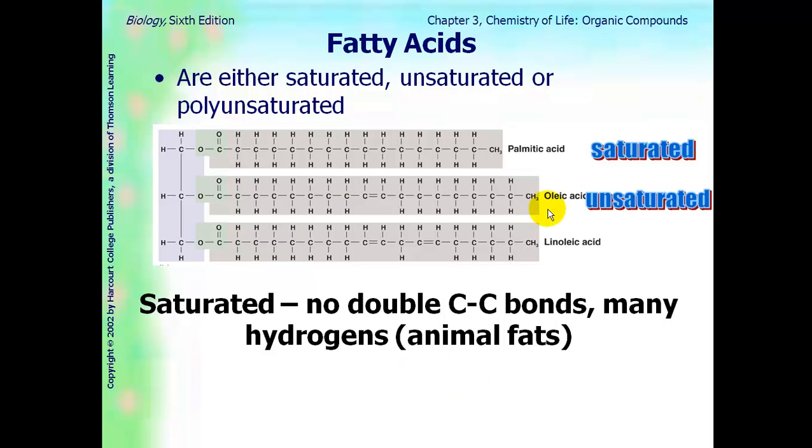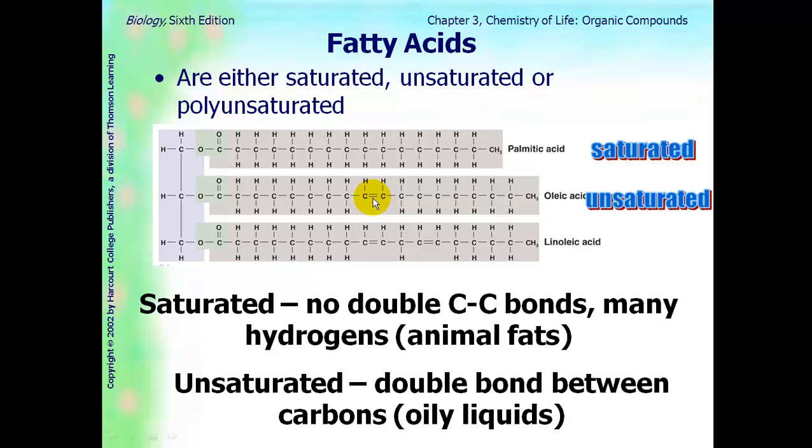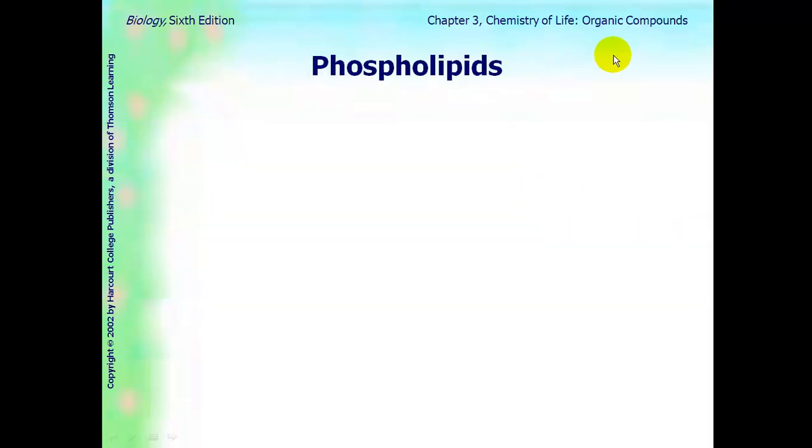Unsaturated fats, like oleic acid, has that carbon-carbon double bond in it, which causes the bend in the molecule. If you have more than one double bond, then it's called polyunsaturated.